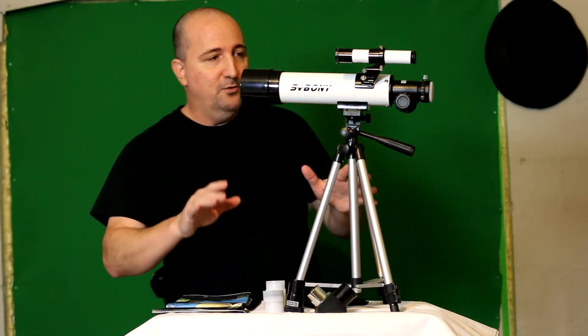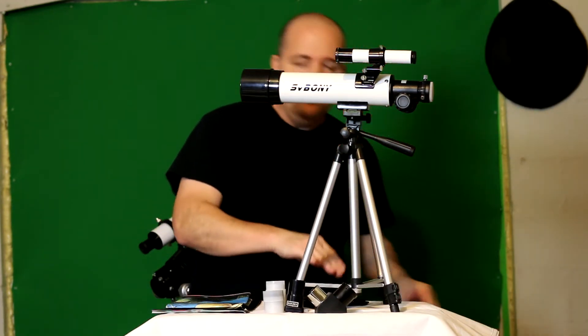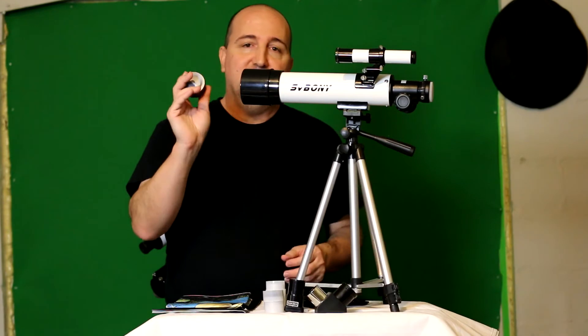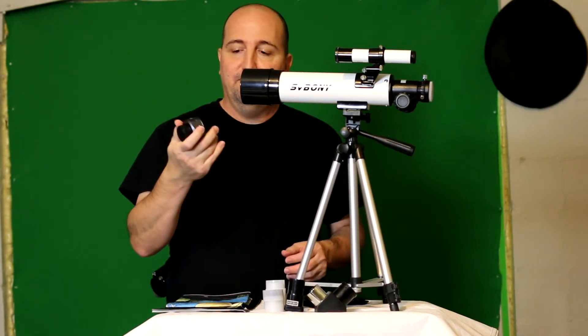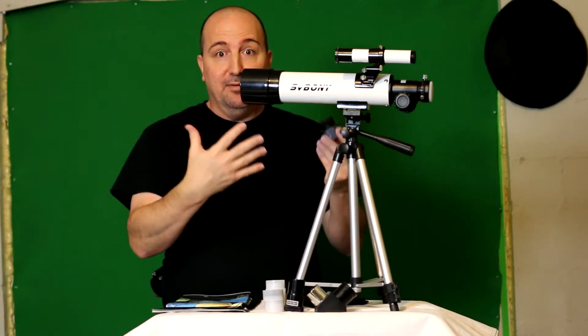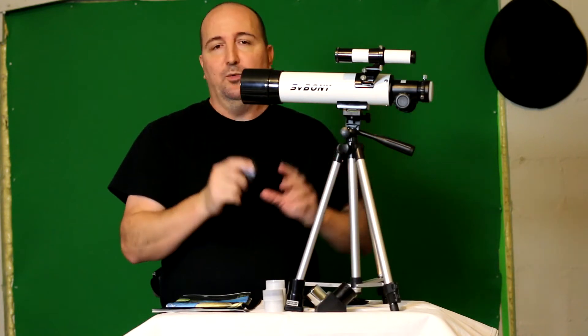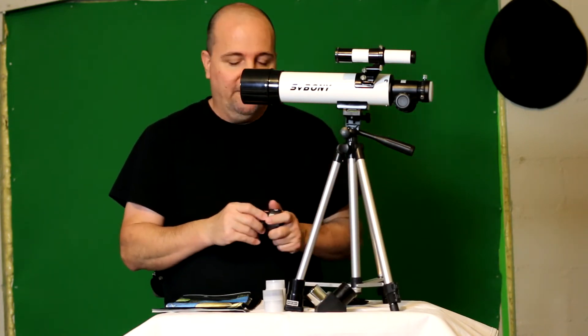Normally what I do is if I'm going to take pictures with this thing, like I said, I don't use my cell phone. I use the Svbony SV105 digital astronomy camera. This doesn't come with it, but it actually complements it. So if you're looking to start getting into imaging, I would also recommend their cameras as well to go with this. It makes it a lot easier, I think, than using the phone.